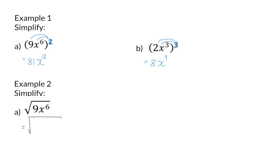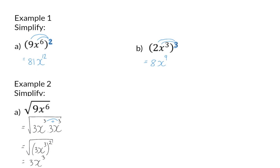So this will be broken up into 3x to the power of 3 times 3x to the power of 3, because when we multiply this out again we will take the exponent 3 plus 3 to get back to x to the power of 6. This can now be rewritten as 3x to the power of 3 squared, so this simplifies to 3x to the power of 3.